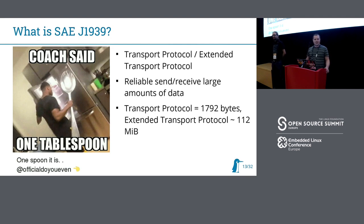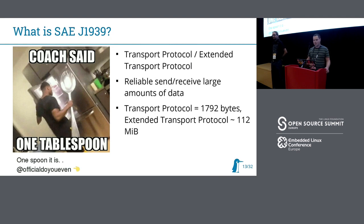This was the main challenging part of the implementation in the kernel, because we need to provide an abstraction layer for an MTU — maximum transfer unit — of 112 megabytes.